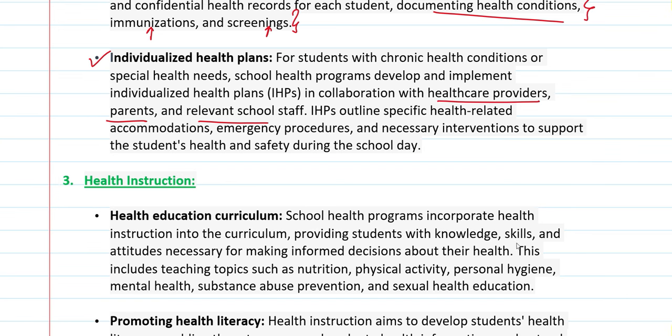In individualized health plans, those who develop the plans collaborate with others — like health care providers, parents, and school staff — to create a proper individualized health plan. If a student has a chronic condition or an emergency situation, such as needing insulin for diabetes, all these things are recorded in the plan. This ensures the child's health and safety.